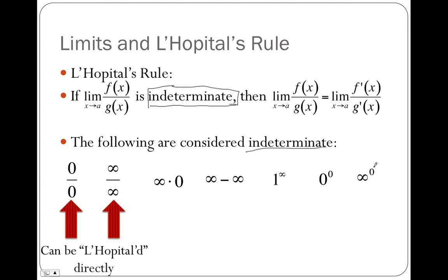However, only zero over zero and infinity over infinity can be L'Hôpitaled directly, because I can only take the derivative of numerator over derivative of denominator if I actually have a numerator and denominator. For any of the other indeterminate forms, I need to perform some algebra first, and then I can apply L'Hôpital's rule. Let's look at some examples.